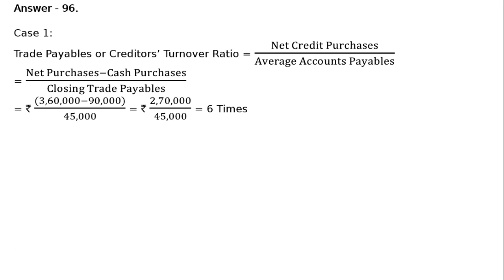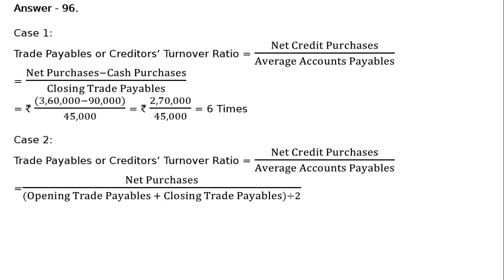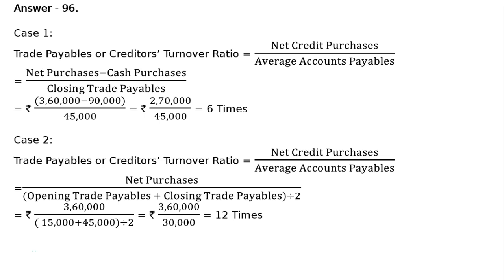Now Case 2. Opening trade payables Rs. 15,000, closing trade payables Rs. 45,000, net purchases Rs. 3,60,000. Trade payables turnover ratio is equal to net credit purchases upon average accounts payable. Since no cash purchase or credit purchase is separately given, net purchase will be treated as credit purchases. For average accounts payable, opening trade payables plus closing trade payables divided by 2, that is 15,000 plus 45,000 divided by 2 equals Rs. 30,000. So Rs. 3,60,000 upon Rs. 30,000 equals 12 times.